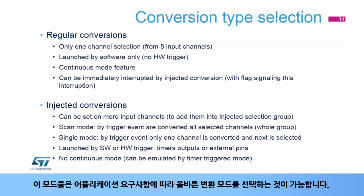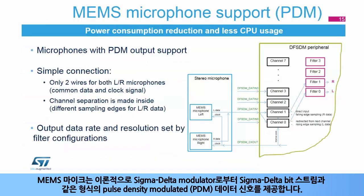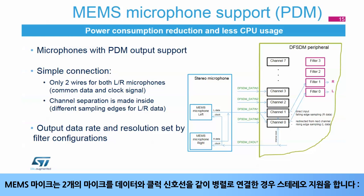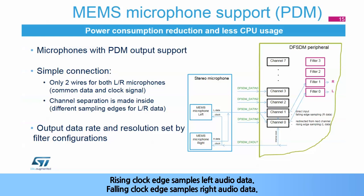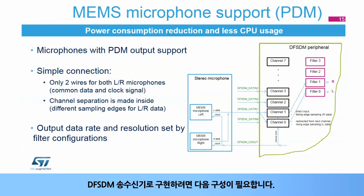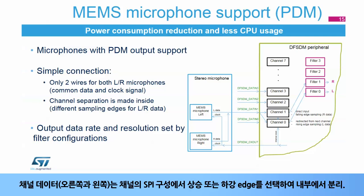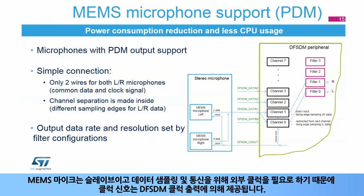MEMS microphones provide a pulse density modulated (PDM) data signal whose format is theoretically like the sigma delta bit stream. MEMS microphones support stereo if two microphones are connected in parallel with common data and clock signals — rising clock edge samples left audio data, falling clock edge samples right audio data. In DF-SDM, channel 0 uses a redirected input from channel 1, while channel 1 uses direct input. Left and right channel data are separated by selecting either the rising or falling edge in the SPI configuration. The clock signal is provided by the DF-SDM clock output, as MEMS microphones are slaves needing an external clock.